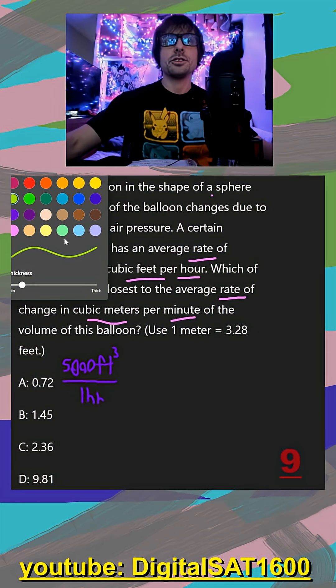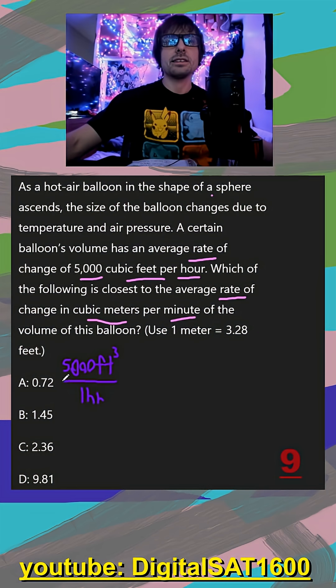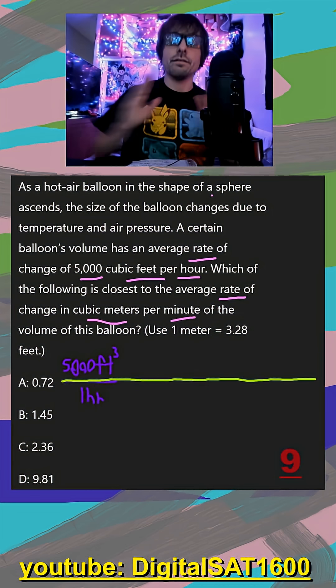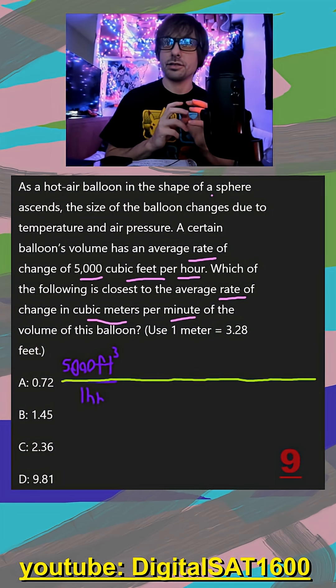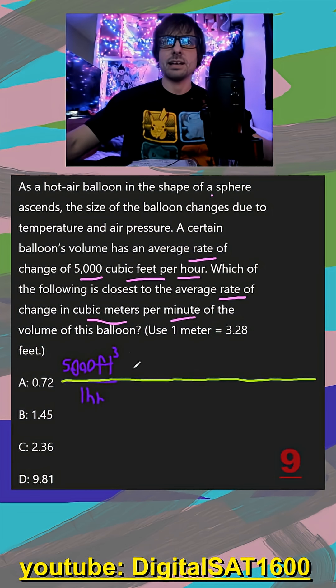And all we have to do is we're treating this like one big fraction. Diagonally, we want identical units so they cancel out. And then vertically, we want numbers that are the same. We'll kind of go through an example here.